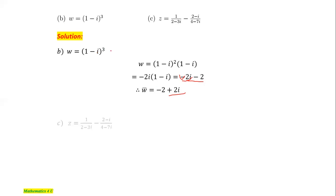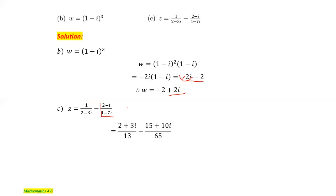The next one, part C: we have the reciprocal of (2 minus 3i) minus (minus 2 minus i) over (4 minus 7i). Separately, we convert each term to general form. For the first term, multiplying by (2 plus 3i) over (2 plus 3i) gives (2 plus 3i) over (4 plus 9), which is (2 plus 3i) over 13. For the second term, (minus 2 minus i) over (4 minus 7i), we multiply by the complex conjugate of (4 minus 7i), which is (4 plus 7i).